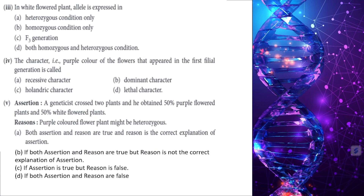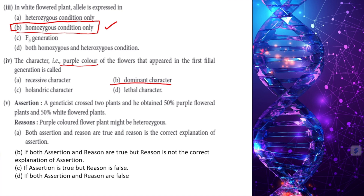In the white flower plant, the allele is expressed in homozygous recessive condition only — never in heterozygous condition. The character that appeared in the first filial generation — purple flower — is called the dominant character.